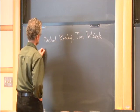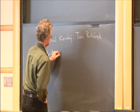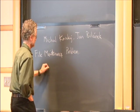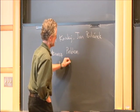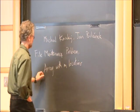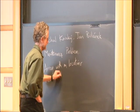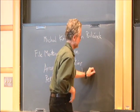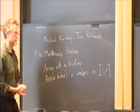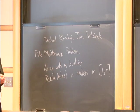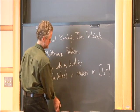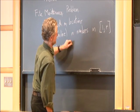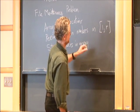The problem has two descriptions. I'm going to mostly talk about it in the language of the file maintenance problem. We have an array with m locations, and we receive in an online fashion n numbers in the range — let's say integers in the range 1 to r. So there are three parameters: m, n, and r. We want to store the numbers in the array in sorted order.